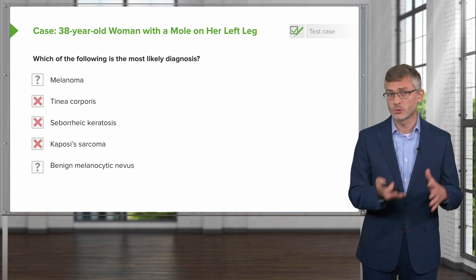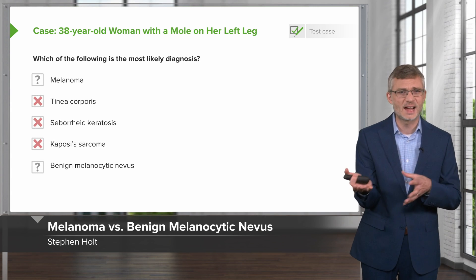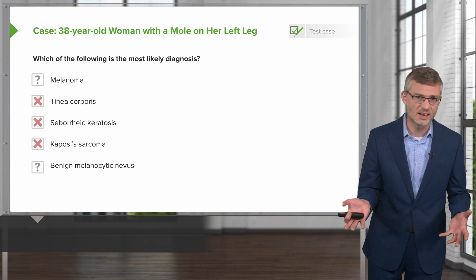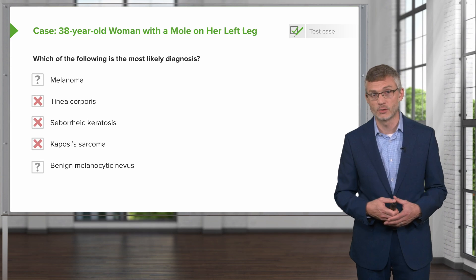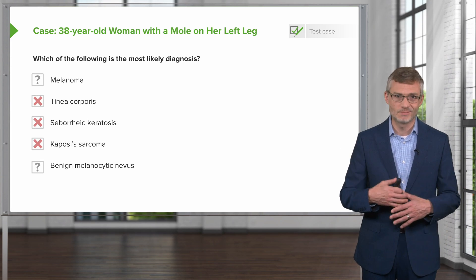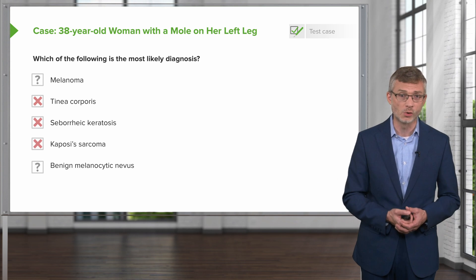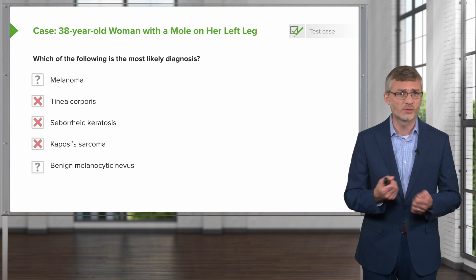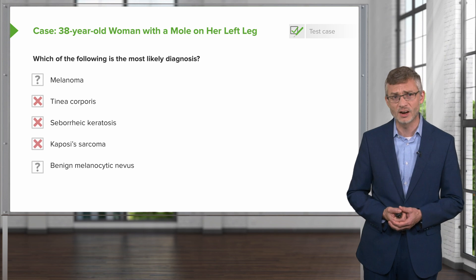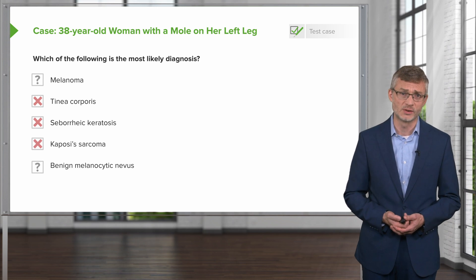How do we distinguish between melanoma and a benign melanocytic nevus? A benign melanocytic nevus, commonly known as a mole, is something that almost everybody has some number of. So how do we tell the difference between that and a very severe, aggressive skin cancer like melanoma?